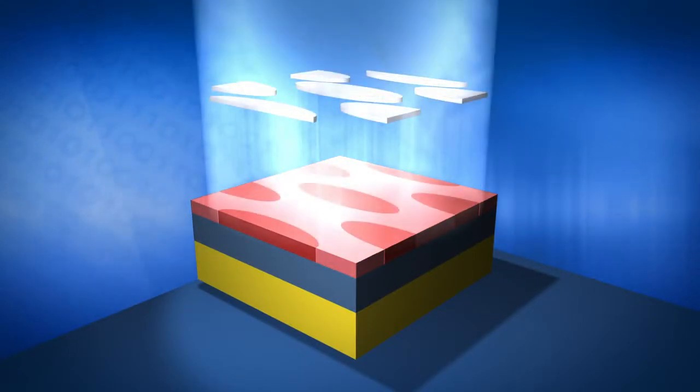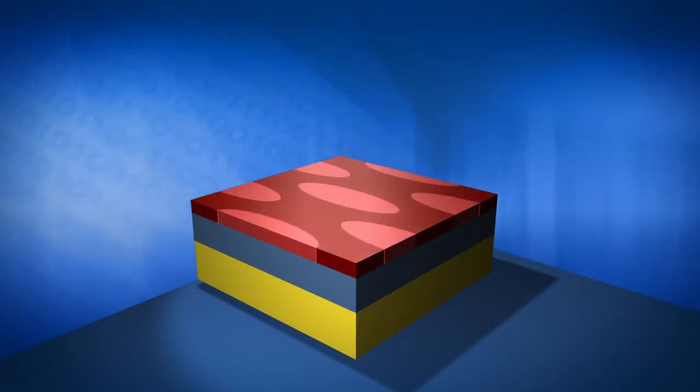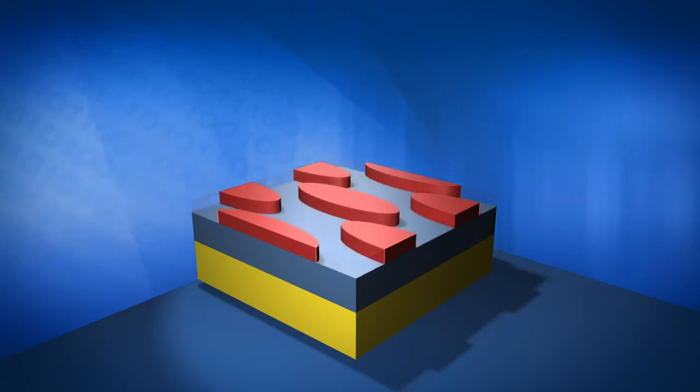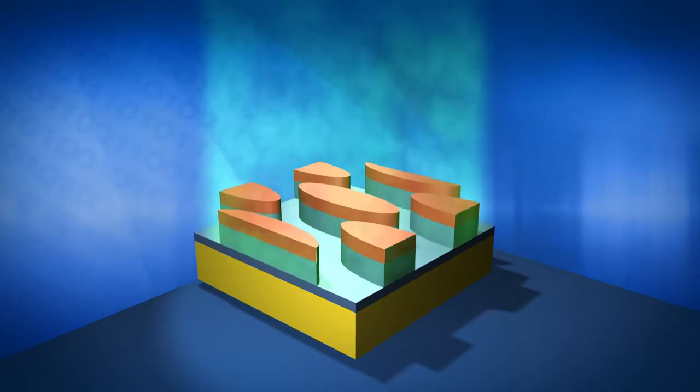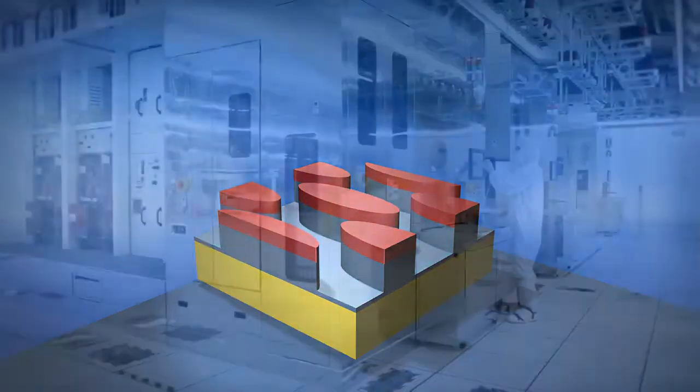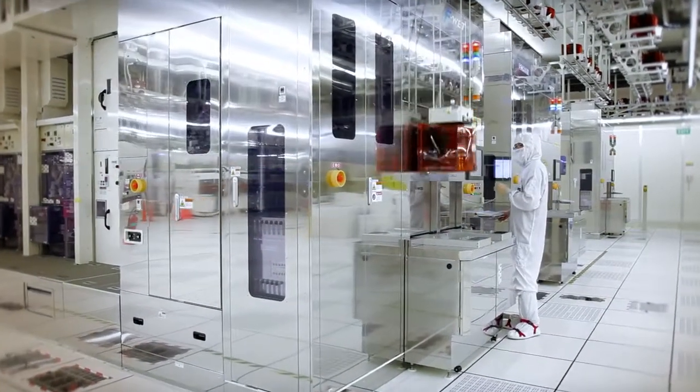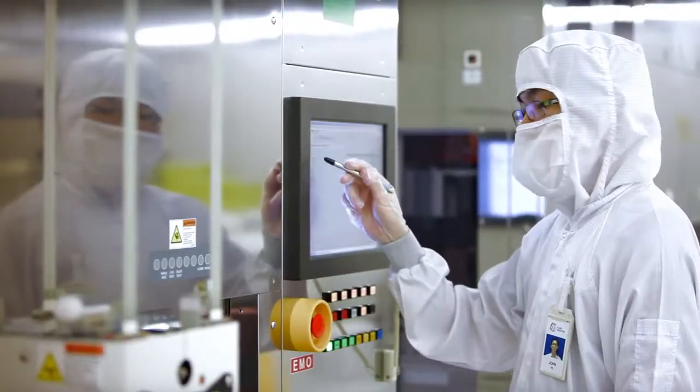Once developed, the exposed areas of resist are removed and a high-energy plasma gas is used to etch the pattern of the circuitry. Following the etching process, the surface is cleaned by immersing the wafers in a chemical bath.